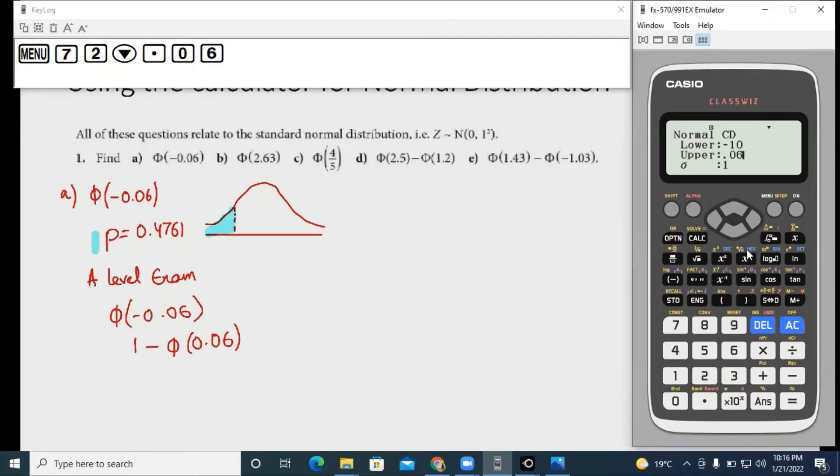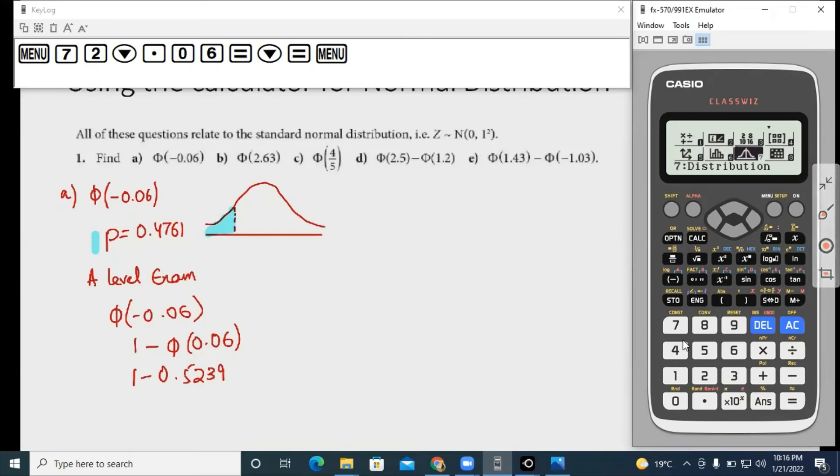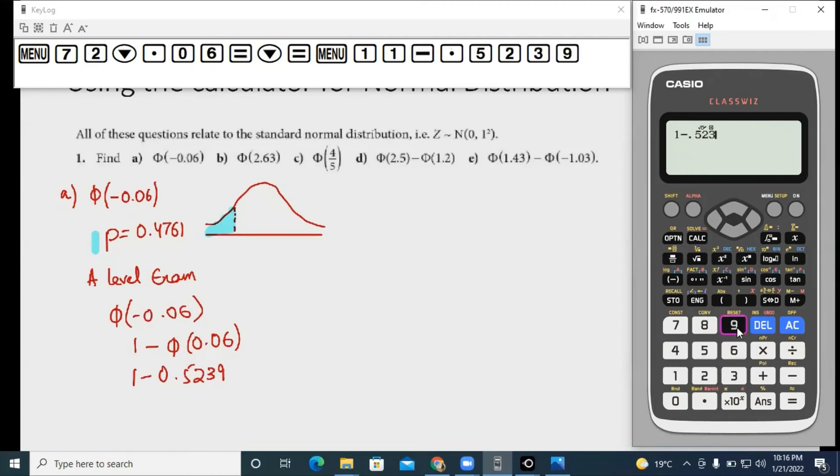Okay, the other two values remain the same and you get 1 minus 0.5239. Then you go to the normal mode of your calculator and you subtract 1 minus 0.5239.